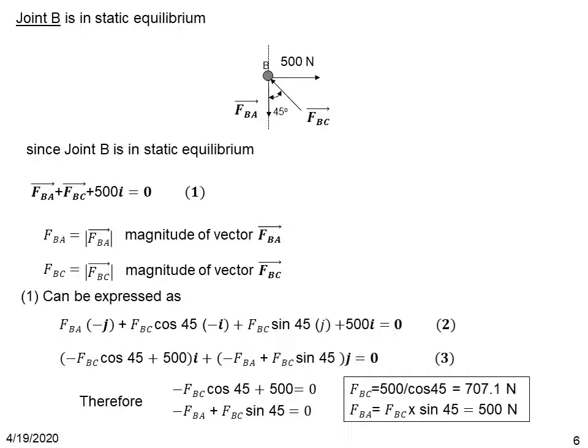Grouping the i and j components and setting each coefficient to zero gives two equations: −FBC·cos45° + 500 = 0, and −FBA + FBC·sin45° = 0. Solving these, we get FBC = 707.1 newton and FBA = 500 newton. We used the condition for static equilibrium to solve two unknowns from two equations.